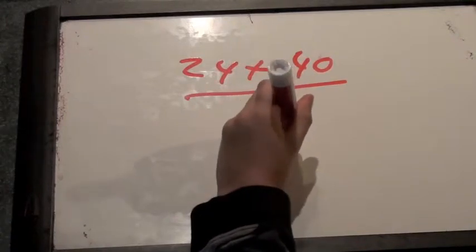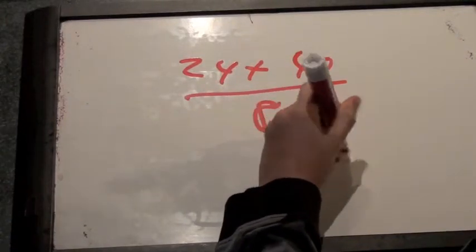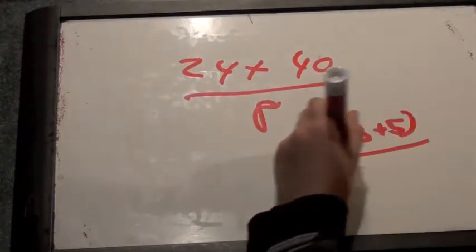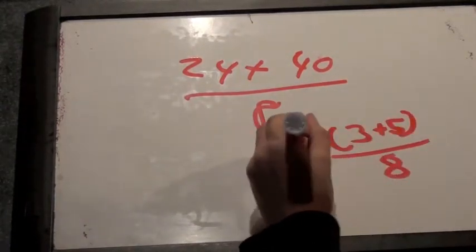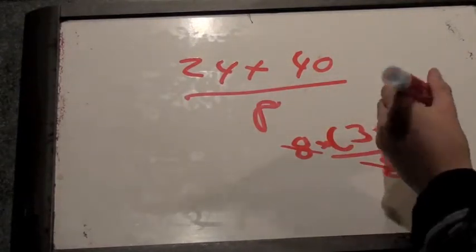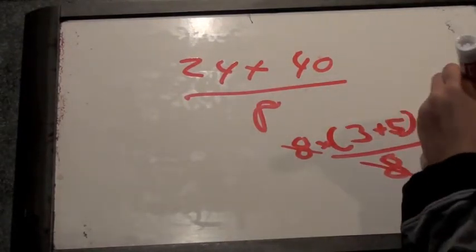And what do we get on the top? You get 8 times 3 plus 5 over 8. And the 8's cancel. And we're just left with 3 plus 5, which is? Which is 8.